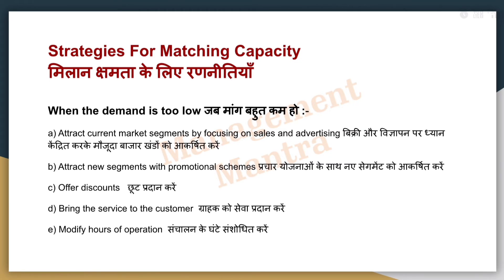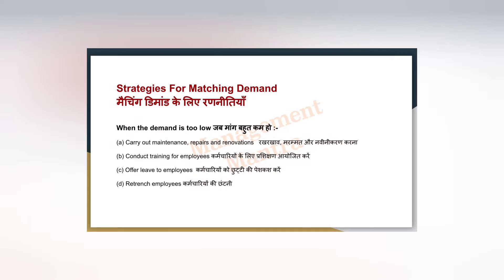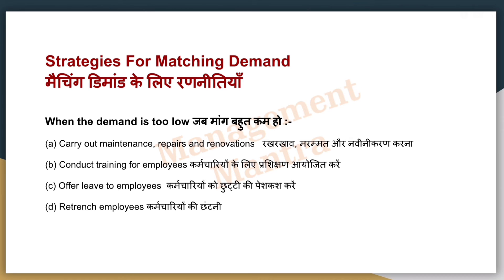Next, strategies for matching demand by adjusting capacity. When demand is too high, we increase capacity by working more time using labor, facilities, and equipment. We train employees with multiple skills, hire part-time employees, pay overtime, and rent facilities and equipment or outsource activities. When demand is low, we pay for maintenance, repair, and renovation, provide employee training, allow employee leave, manage employee retirement, or reduce employees to cut costs.